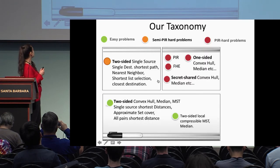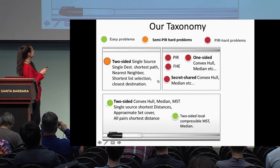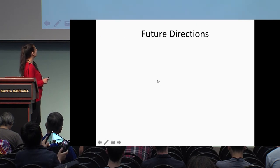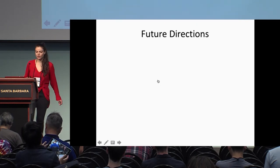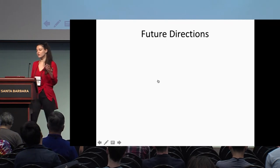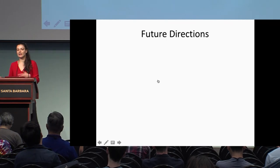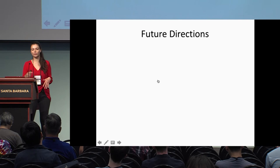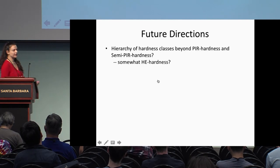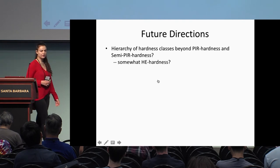Here is our taxonomy: easy problems, semi-PIR-hard problems, and PIR-hard problems. We provided this classification of hard and easy problems. But, like NP-completeness, you should take our framework with a grain of salt, and there are many future directions to explore.